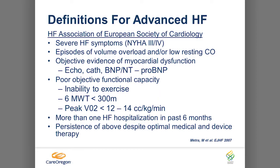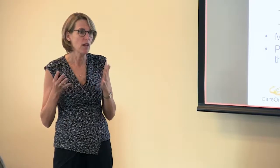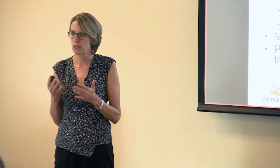For advanced heart failure, when do we actually move that patient from a C to a D? They have to have severe heart failure symptoms — class three to four — they have to have episodes of volume overload. You're looking at the echo and it shows functional changes. The B-type natriuretic peptide — when am I going to use that? I'm going to use that a lot. It is a really good marker for me to look at my patient.